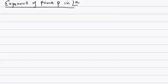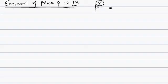I'll explain how to find the exponent of a prime p in n factorial. This means how many times p is present in n factorial — how many factors of p are present. We call that the exponent or power of prime p. If p to the power r divides n factorial, we need to find r. The method is given in the theory, but I'll explain with an example first.